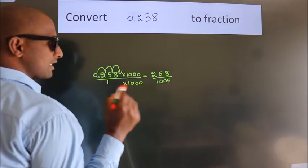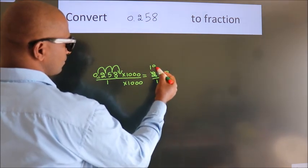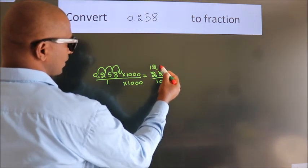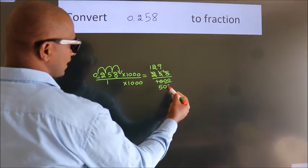Now I cancel with 2. 2 1s, 2 2s, 2 9s, 2 5s, these 0s as it is down.